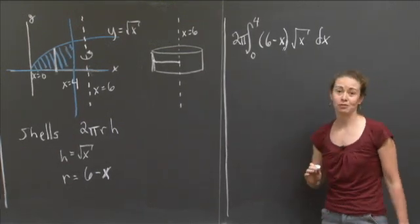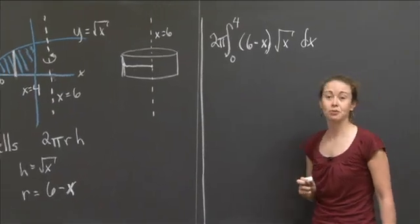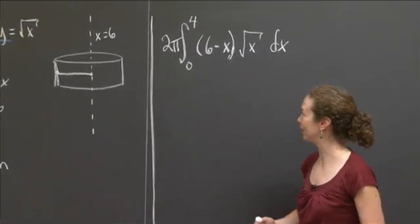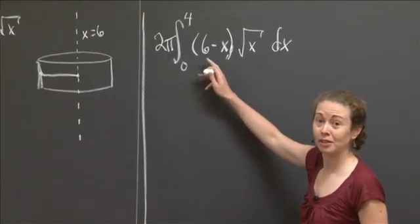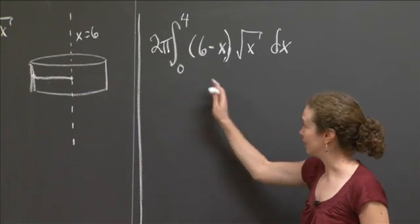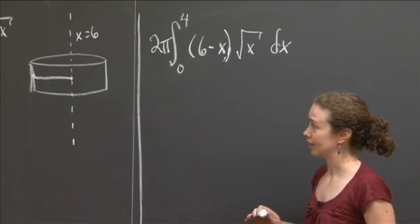And at this point, solving the problem is fairly straightforward. I can write √x as x^(1/2) to make myself feel a little better about it. I can then distribute. And then I just use the power rule to do the integration and evaluate to get an actual number to get that volume.